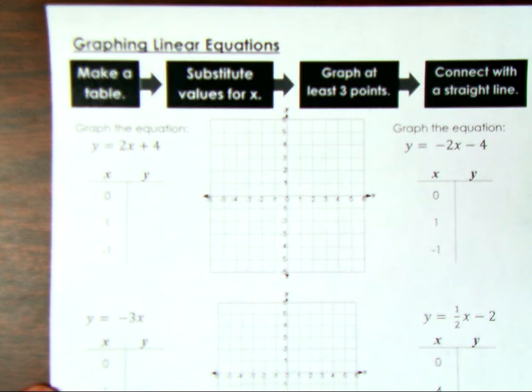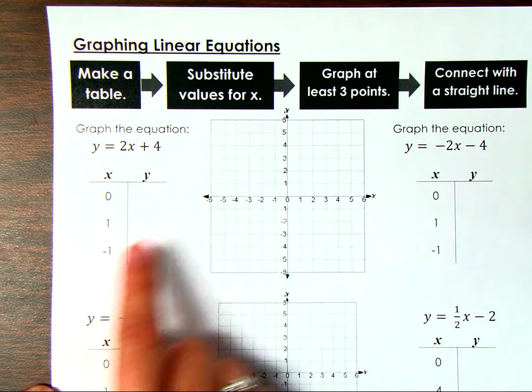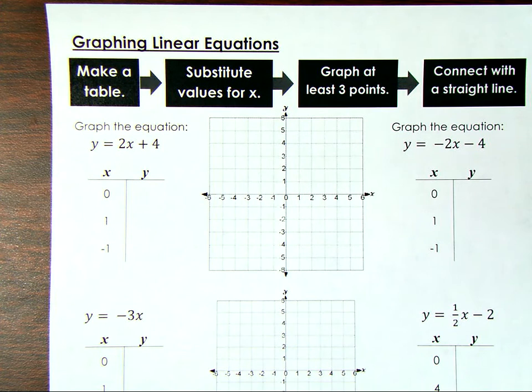The first thing we need to do is make a table with our x and y values. We're going to use the equation and substitute values for x, and we want to graph at least three points so it gives us a really good idea of how this line is going to look. Then we're going to connect the dots with a straight line — this line is going to be continuous and go on forever, even though we might not see it exactly on the graph.